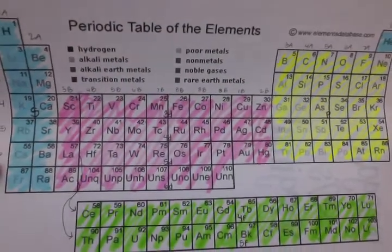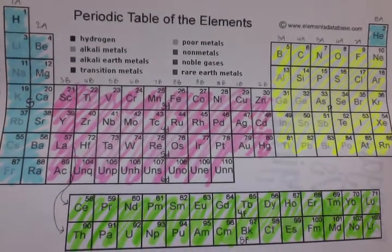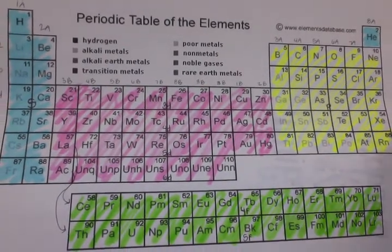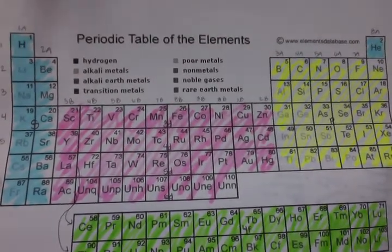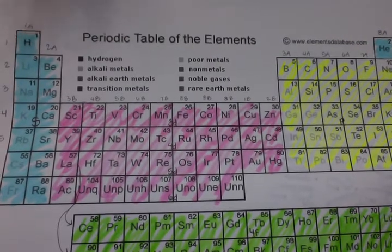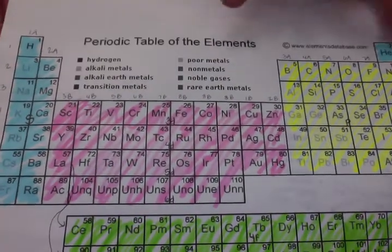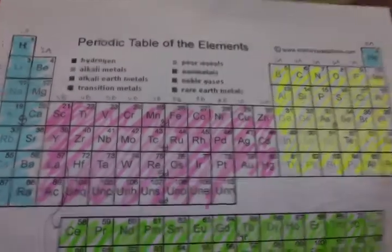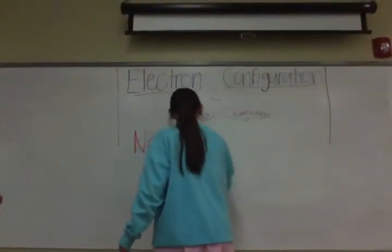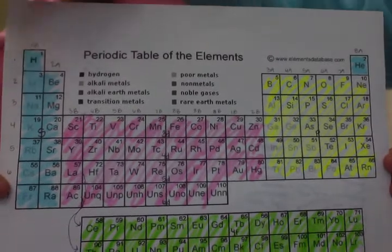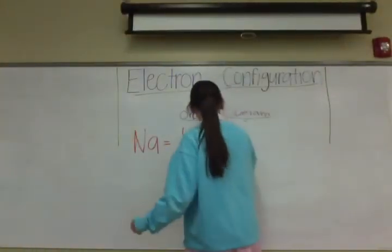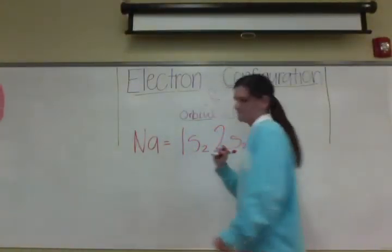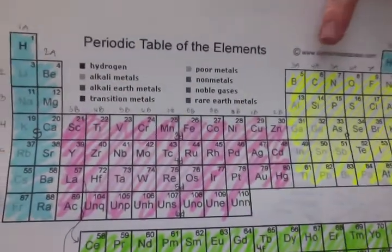This is how you do electron configuration. We're doing sodium. First you look to see how many boxes it passes. The first period is one, and the blue is s. There are two boxes, so it would be 1s². Then the next row is two, but there are only two blue boxes, so you start with 2s².